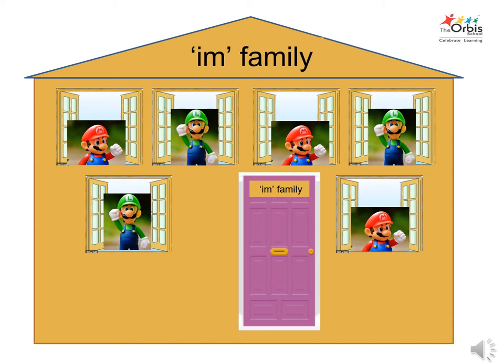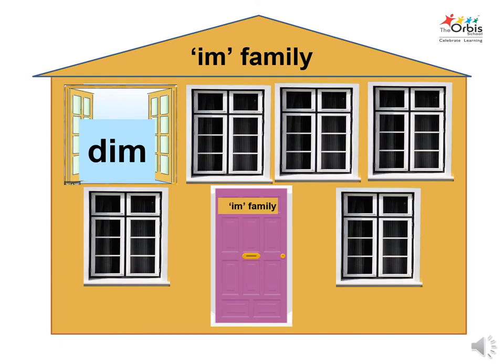M family. They live in a beautiful house. There are six members in the M family. We will meet them one by one. Each family member has a room with a window. Let's find the names of each family member living in the house.